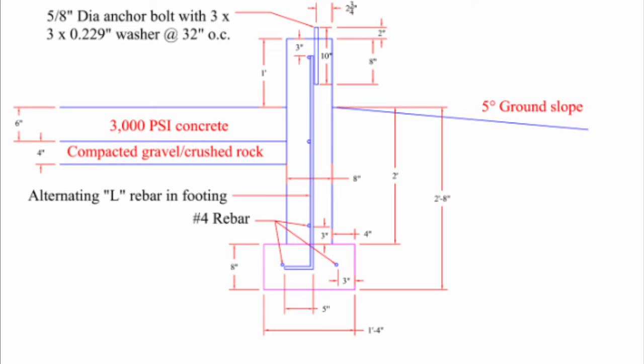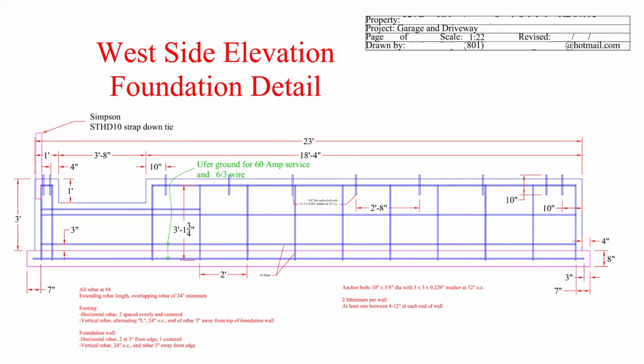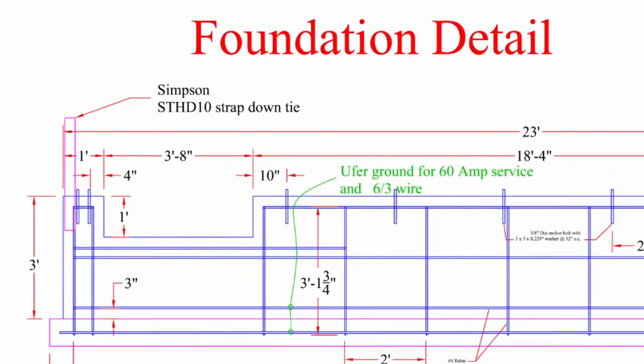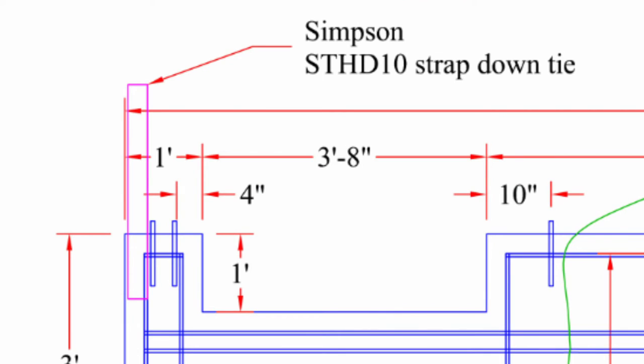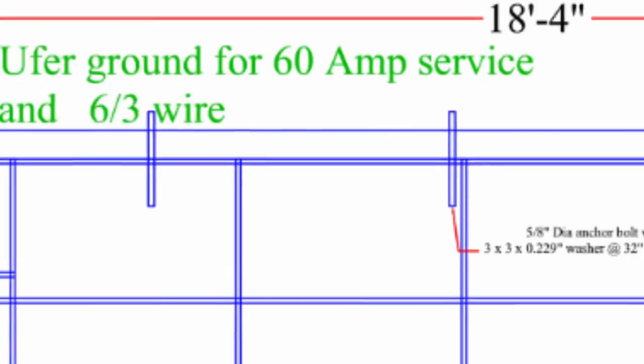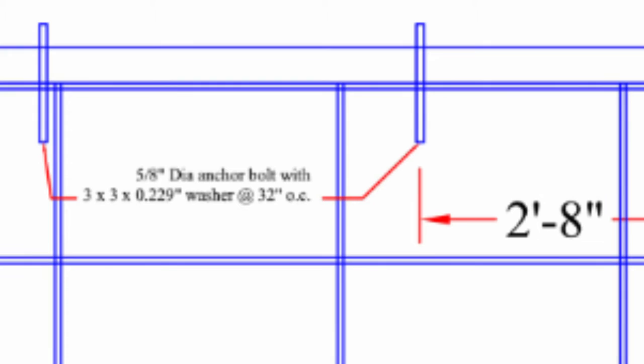It even shows the anchor bolts that will be used to hold down the wood framing. On this west side wall there's a lot of detail. You can see the Simpson strap down ties to help the front of the garage stay in place with the concrete in case of an earthquake and for stability. You can see the anchor bolts that are spaced according to building code. The size of the anchors and also the washers are very detailed to meet building code.